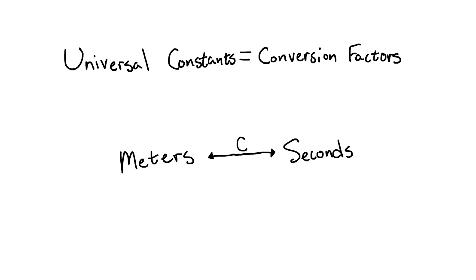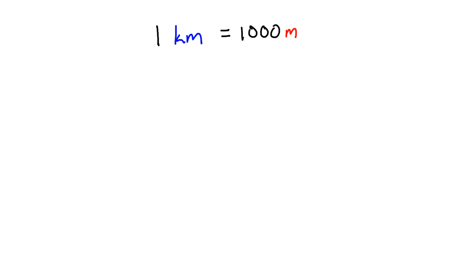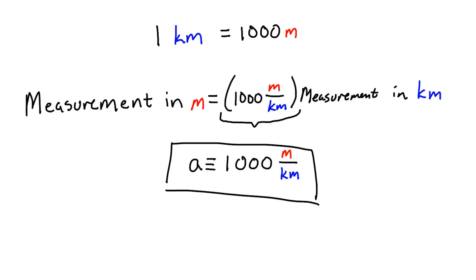As a simple example of this, consider converting between kilometers and meters. We know that there are 1000 meters in a kilometer, so it's very easy to convert between measurements made in meters and measurements made in kilometers, just by multiplying or dividing by a factor of 1000 meters per kilometer. We'll give this conversion factor the name A just for simplicity.